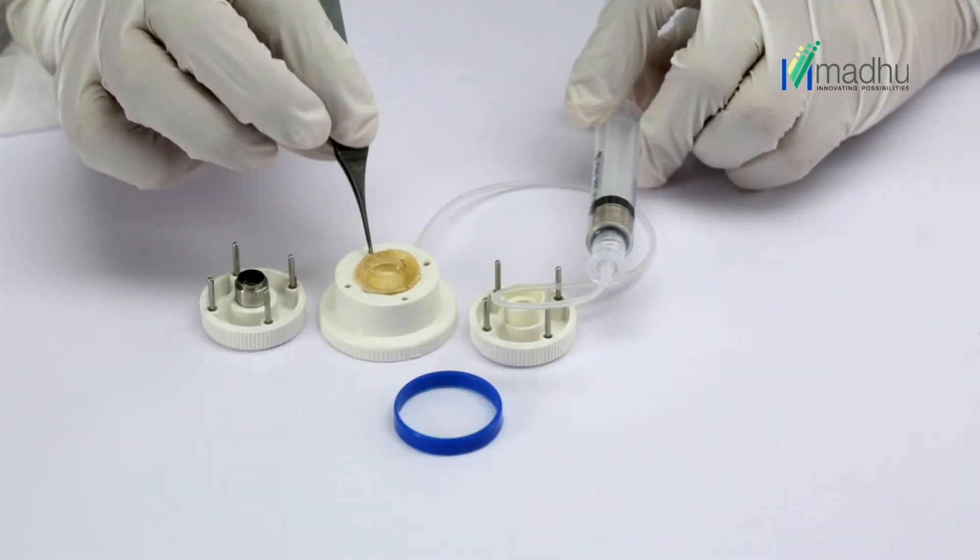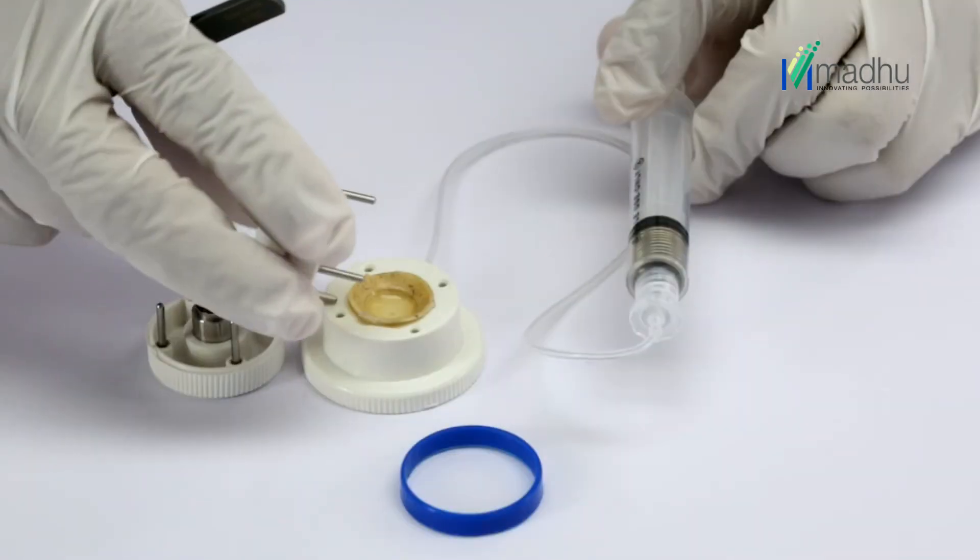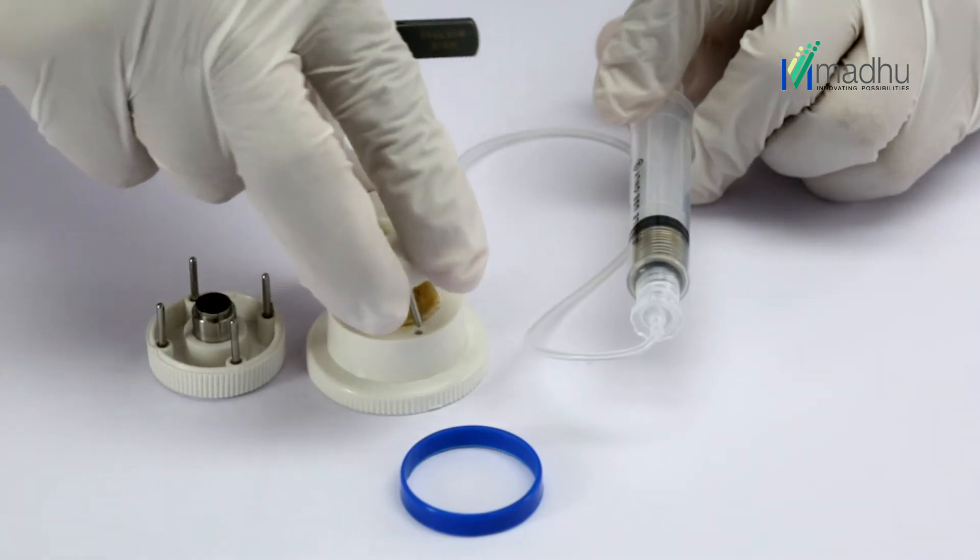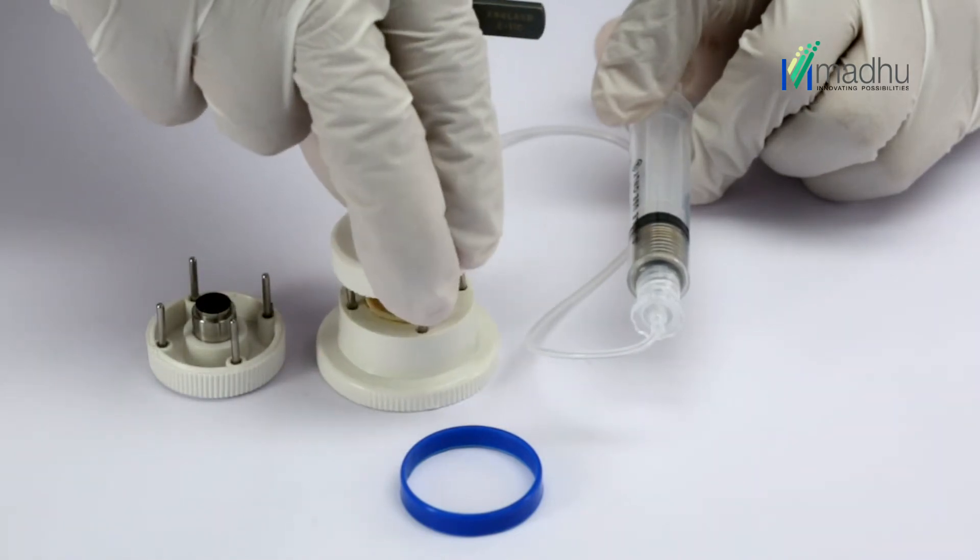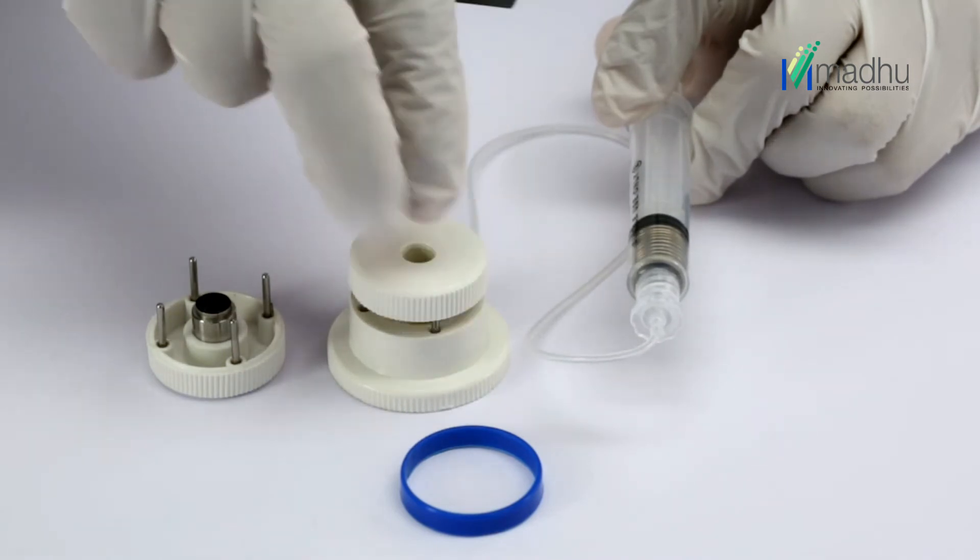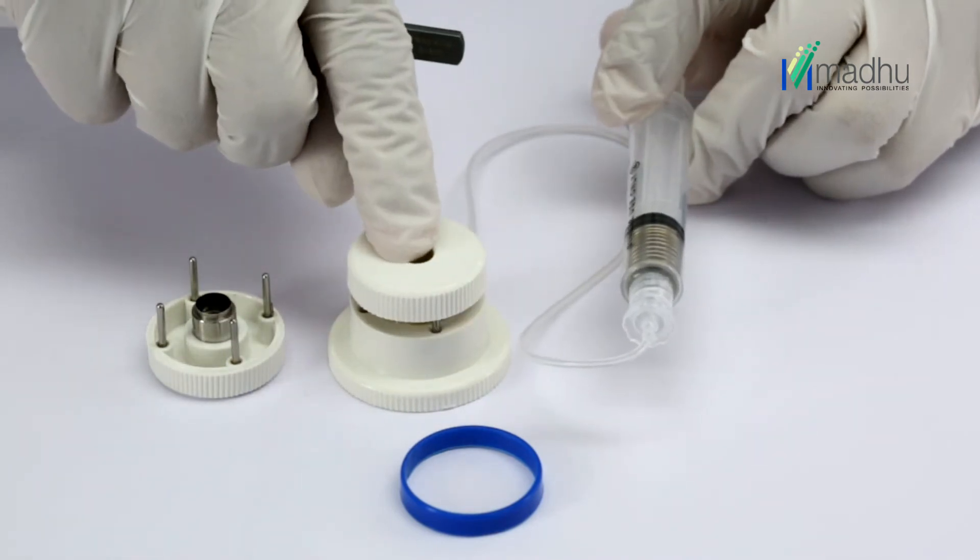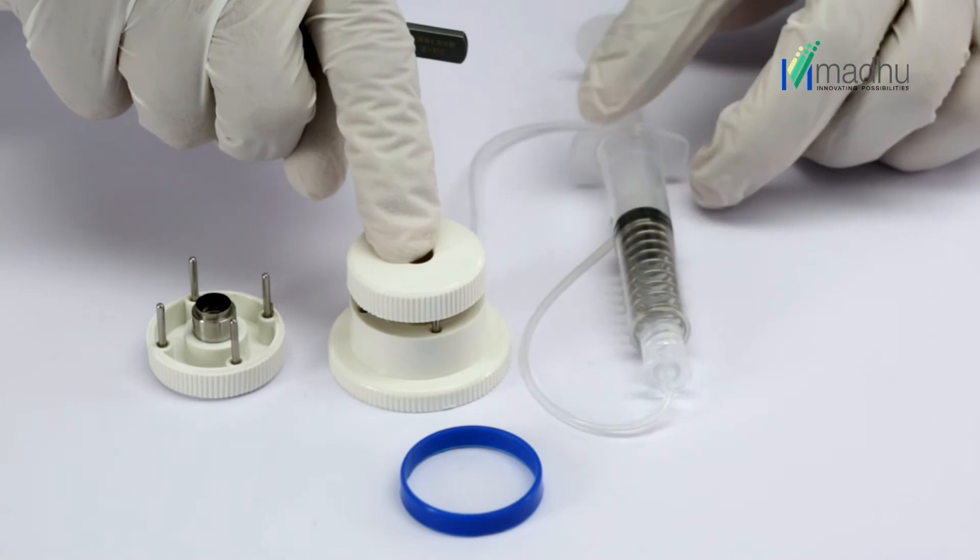Center the donor cornea with a fine-toothed forceps. Insert the four stainless steel guide pins of the sitting ring housing into the cutting block corresponding holes and press down gently. Release the plunger of the syringe abruptly to create vacuum and hold the cornea firmly onto the base.